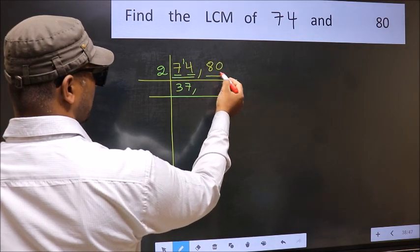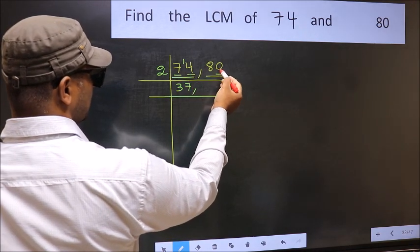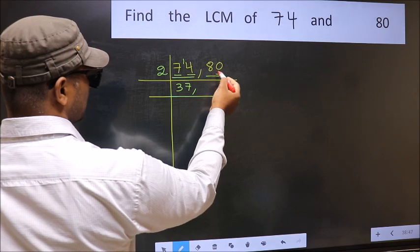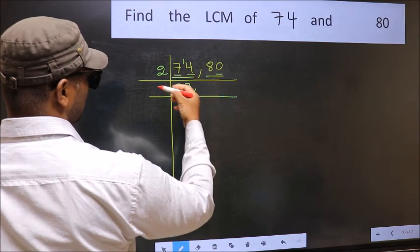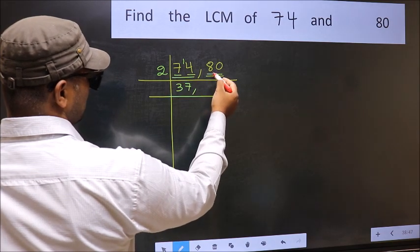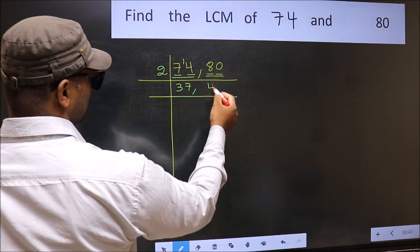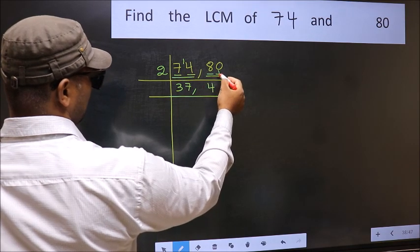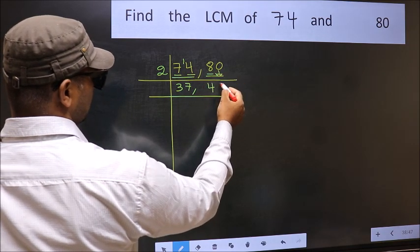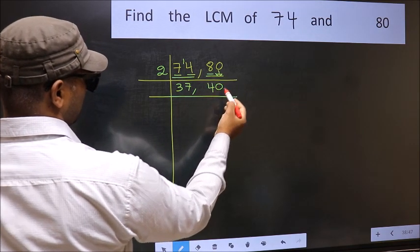The other number is 80. Last digit is 0, so it is divisible by 2. The first digit is 8 — 2 fours are 8 — and bring the 0 down.